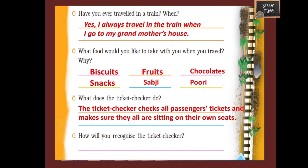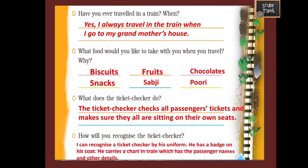Question: What does the ticket checker do? Answer: The ticket checker checks all passengers' tickets and makes sure they are all sitting on their own seats. Question: How will you recognize the ticket checker? Answer: I can recognize the ticket checker by his uniform. He has a badge on his coat and he carries a chart which has passenger names and other details.